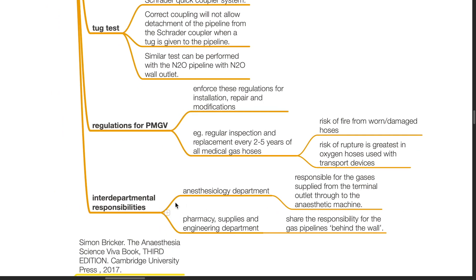Interdepartmental responsibilities: The anesthesiology department is responsible for the gases supplied from the terminal outlet through to the anesthetic machine. The pharmacy, supplies, and engineering department share the responsibility for the gas pipelines behind the wall.